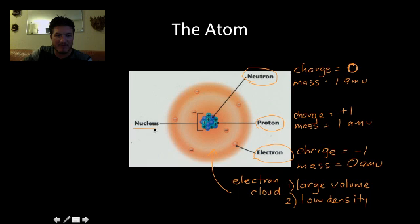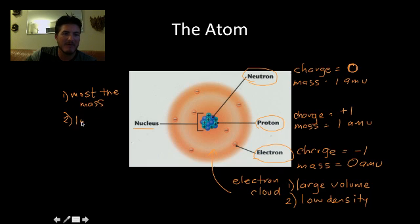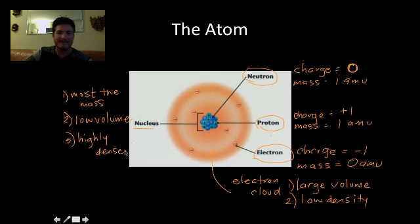You need to know this information here. Now, the neutron and the proton, they come together to form the nucleus. Some important information you need to know about the nucleus is that it is very small, but it holds most the mass of the atom. But it's got low volume. So when we have a lot of mass in a small volume, we say that that is highly dense. It's got high density. So just a little recap of some of the things we talked about in class.